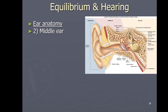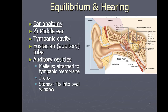The middle ear is where we have the auditory ossicles. In this cavity you have these bones used in hearing — three in each ear. We have the malleus, the incus, and the stapes. The malleus is supposed to look like a hammer, almost like a mallet.